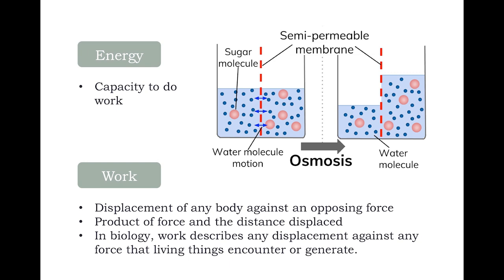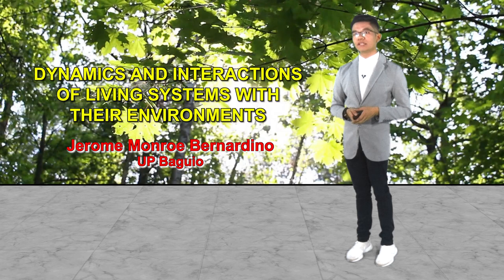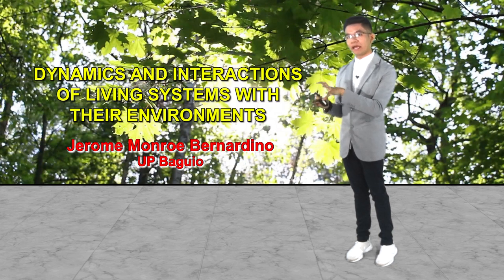By definition, an open system is a system wherein energy is cycled and transferred within that given system to another system. In other words, energy is not compartmentalized in a given living system. In order for you to understand this, let us define what energy is. Energy is defined as the capacity to do work. And in order for work to be done, there has to be an input, and that input should be in the form of energy. Work, on the other hand, is defined as the displacement of a body against an opposing force, meaning a displacement or movement within a system needs to take place.